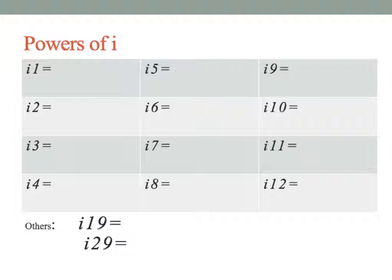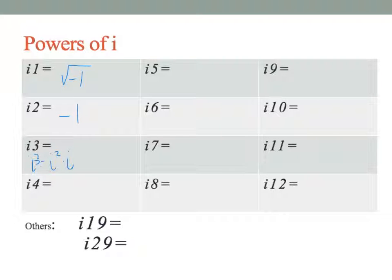Let's look at the powers of i. i to the first is i; i squared is negative 1. What's i cubed? Well, i cubed is i squared times i — and i squared is negative 1 — so i cubed is negative i.